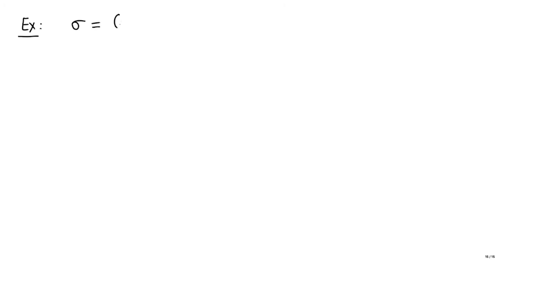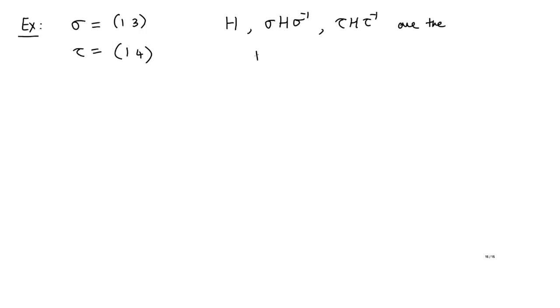There are exactly 3 two-Sylow subgroups of S4. They are all conjugates of each other and hence all isomorphic — all copies of D4. To get the other two, take the transpositions (1 3) and (1 4) that are missing from H; then H, σHσ⁻¹, and τHτ⁻¹ are the three distinct 2-Sylow subgroups of S4.